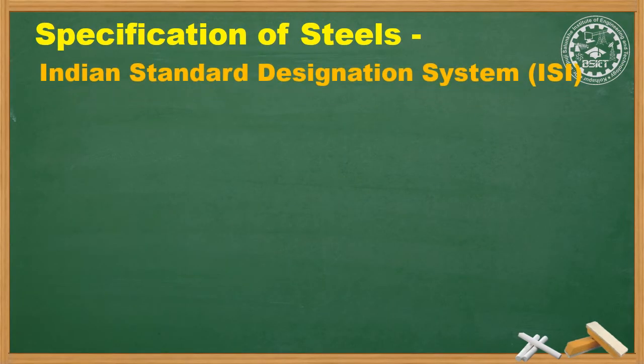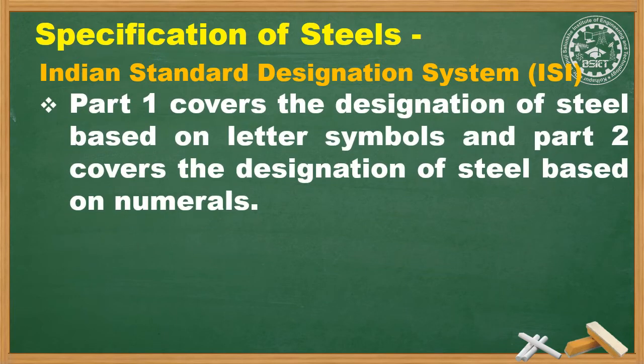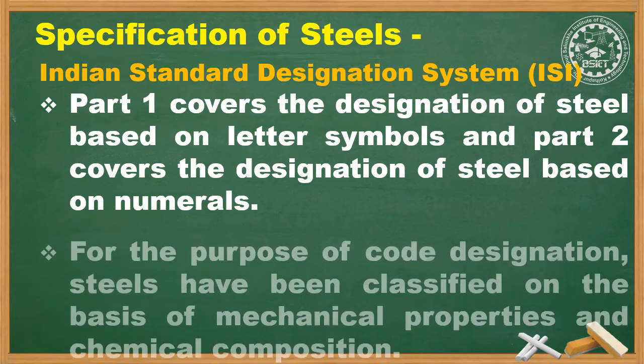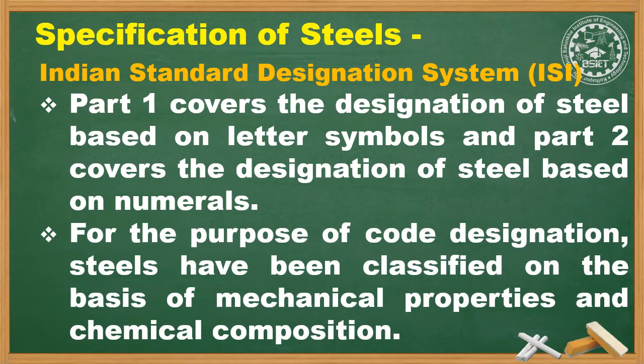According to the Indian Standard Designation System — that is ISI — Part 1 covers the designation of steel based on letter symbols, and Part 2 covers the designation of steel based on numerals. For the purpose of code designation, steels have been classified on the basis of mechanical properties and chemical composition.